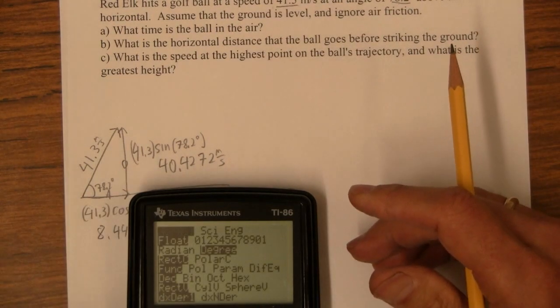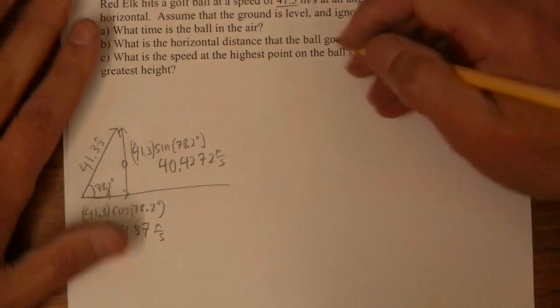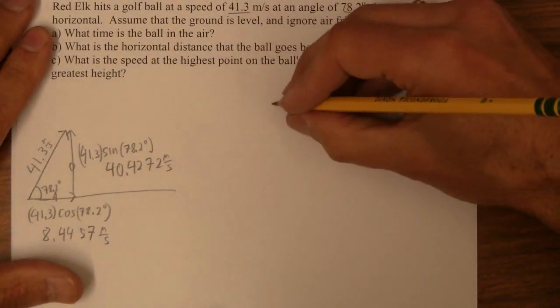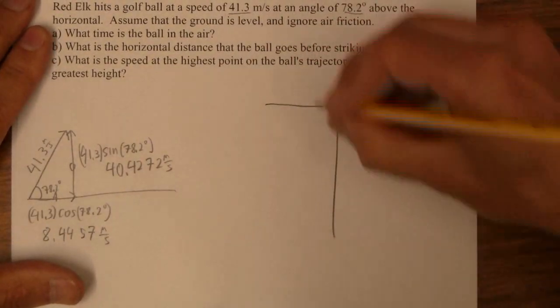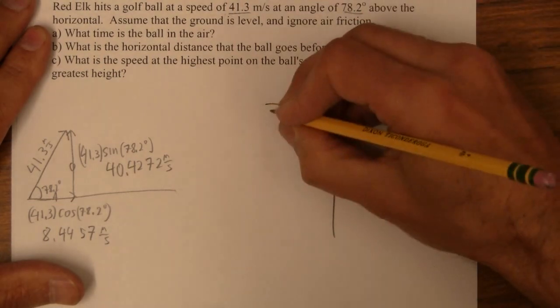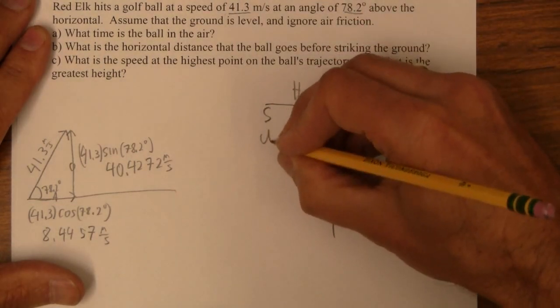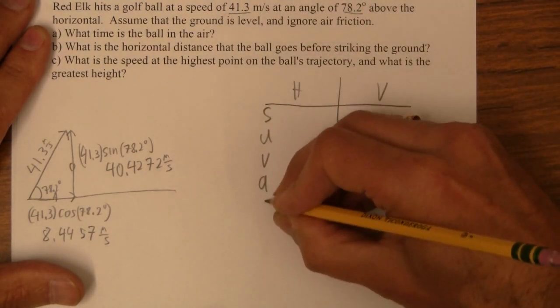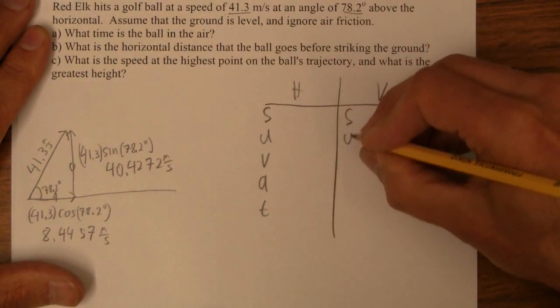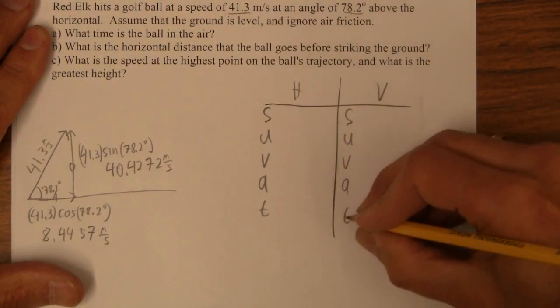Let's just make sure I'm in degrees. That would be bad. And now I'm all set. Now we can just set this thing up here, horizontal and vertical. Displacement, initial velocity, final velocity, acceleration, and time.